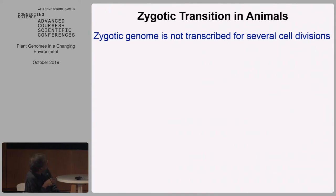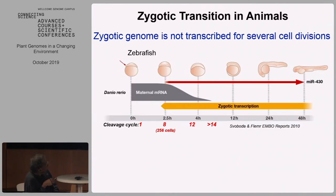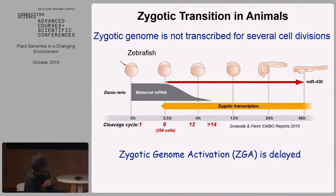In animals, the zygotic genome is not transcribed for several cell divisions, which makes sense given Ethel Harvey's experiment where you could go on without a nucleus. Early on, it's maternal mRNA and maternal proteins that drive the embryonic divisions. In zebrafish and similar animals, it's maternal RNA until about 256 cells, and that's when zygotic transcription comes on. A microRNA then starts to remove the maternal mRNA. This process of initiation of zygotic transcription is called zygotic genome activation, or ZGA, and it is delayed in all animals.